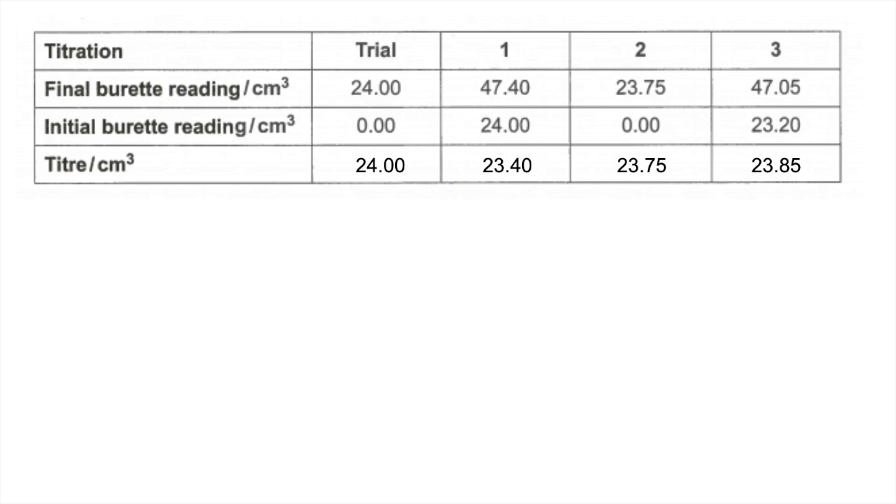Which for the mean, well you never use the trial, so forget about that straight away. And then looking at these three, we're looking for concordant results. In other words, within 0.1 cm cubed, so it's those two there. Sorry, I haven't got a tick, so I have to use a heart. So the mean is obviously the average of those two, which is 23.80.